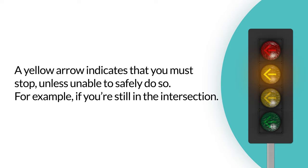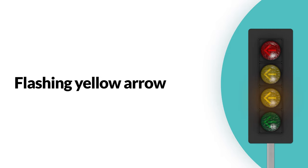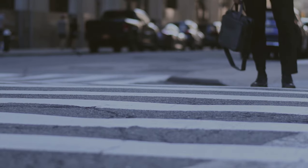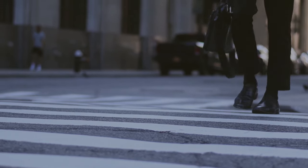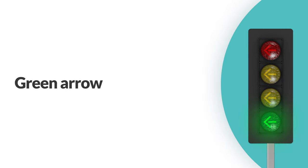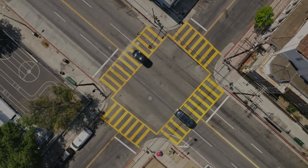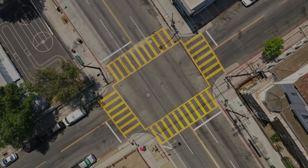A flashing yellow arrow means that you are allowed to turn, but must do so carefully — oncoming traffic will face a green light and has the right-of-way, so make sure to yield to oncoming traffic and pedestrians. A green arrow means go: you can make a protected turn in the direction of the arrow, meaning that oncoming vehicles, cyclists, and pedestrians are stopped by a red light. Yield to anyone still in the intersection.